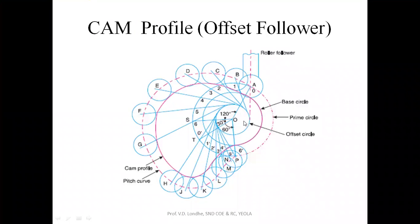After drawing the offset circle, join O to A. From this reference line, take the angles of rise, dwell, and return. Divide the prime circle into six or eight equal parts matching the displacement diagram divisions. The projections will now be tangent to the offset circle instead of being taken from center point O. Take the displacement of the follower at each point — one to one, two to two — plot these displacements on the projections, draw the lower portion of the follower roller, and then using a French curve draw the cam profile.